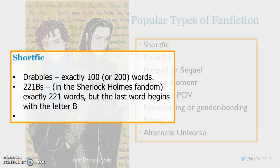Another kind of short fic, found among Sherlock Holmes fans, are 221B's. These are named in honor of 221B Baker Street, the address where Sherlock Holmes and John Watson lived. These stories are exactly 221 words, but the last word must begin with the letter B.